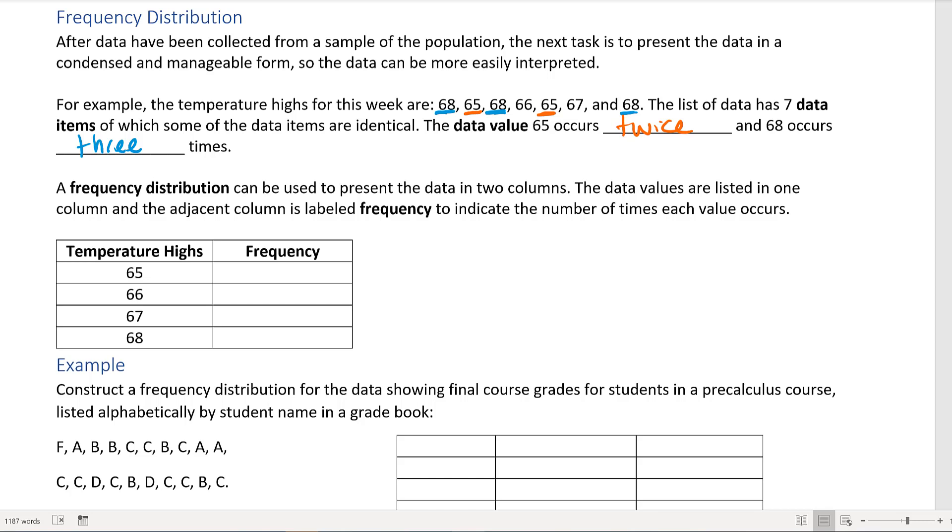A frequency distribution can be used to represent the data in two columns. The data values are listed in one column and the adjacent column shows the frequency to indicate the number of times each one occurred. We said 65 appears twice, 68 appears three times, and both 66 and 67 occur once. If I add this up, I should get seven total values, one for every day of the week.